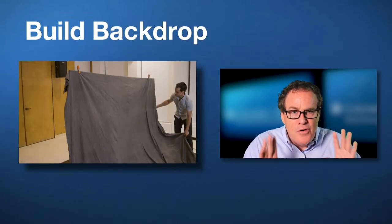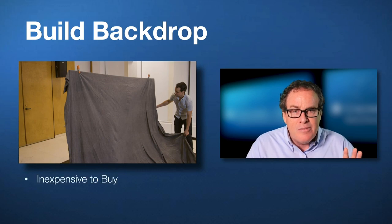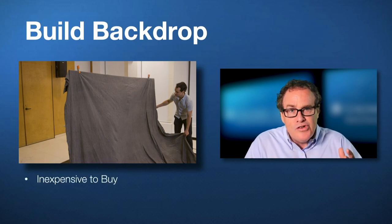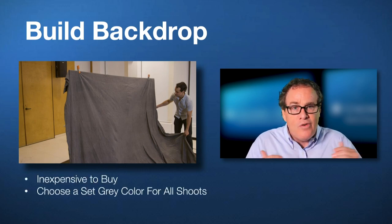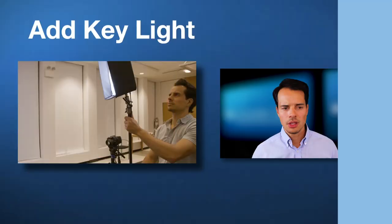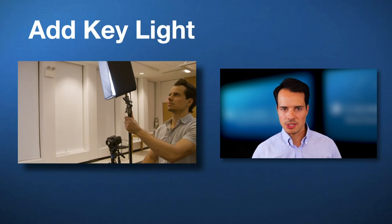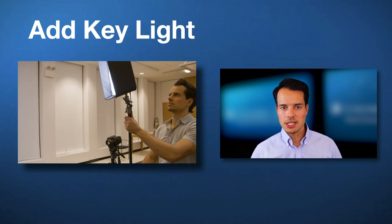We start off by building the backdrop. This is a basic gray photo backdrop that's relatively inexpensive and can be purchased in most photo stores. We use a gray one to match across all our locations around the world. Once you have that in place and you know where the subject is going to be sitting, we're going to add in our key light.